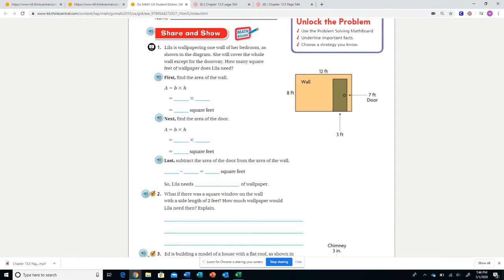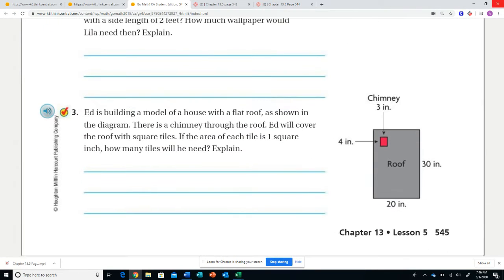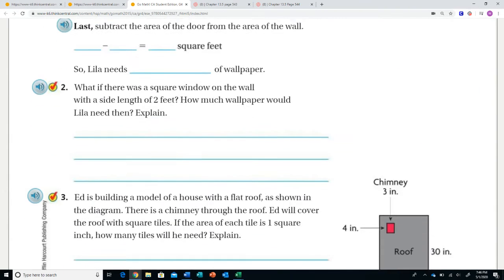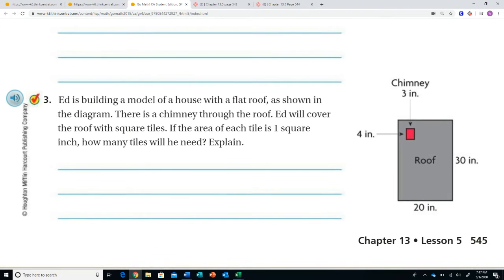Moving on, let's take a look at question number three. Down at the bottom of page 545, Ed is building a model of a house with a flat roof as shown in the diagram. There is a chimney through the roof. Ed will cover the roof with square tiles. If the area of each tile is 1 square inch, how many tiles will he need?